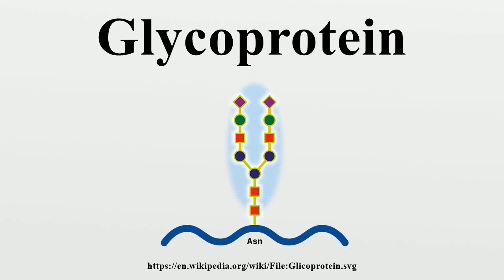Glycoproteins are proteins that contain oligosaccharide chains covalently attached to polypeptide side chains. The carbohydrate is attached to the protein in a co-translational or post-translational modification, a process known as glycosylation. Secreted extracellular proteins are often glycosylated, and in proteins that have segments extending extracellularly, those extracellular segments are also glycosylated.